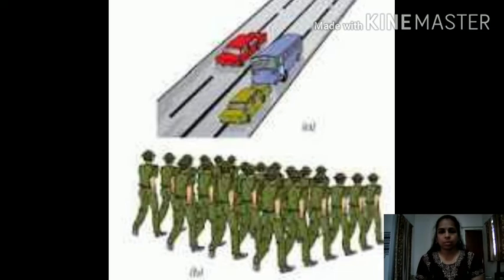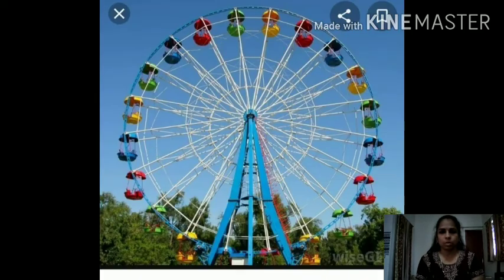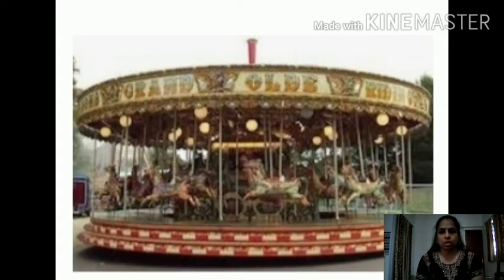The second one is circular motion. When an object moves in a circular path, it is said to be in circular motion. For example: the motion of a child in a merry-go-round, and the motion of Earth around the Sun. We all know that the path followed by Earth is elliptical, which can be treated as a circular path.